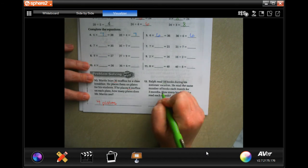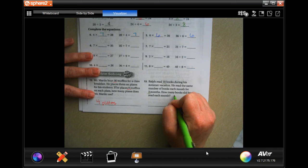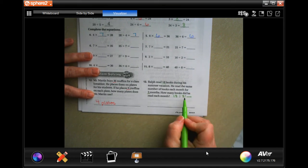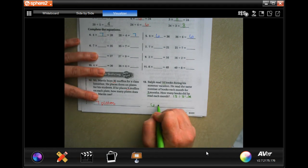Ralph read 18 books during his summer vacation. He read the same number of books each month for three months. So 18 divided by three, three times six is 18, so six books.